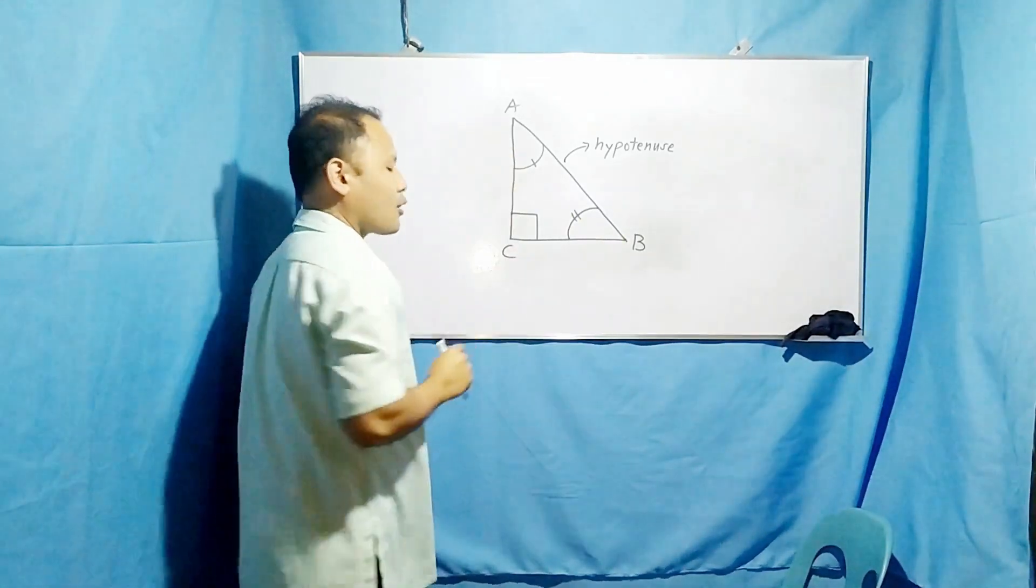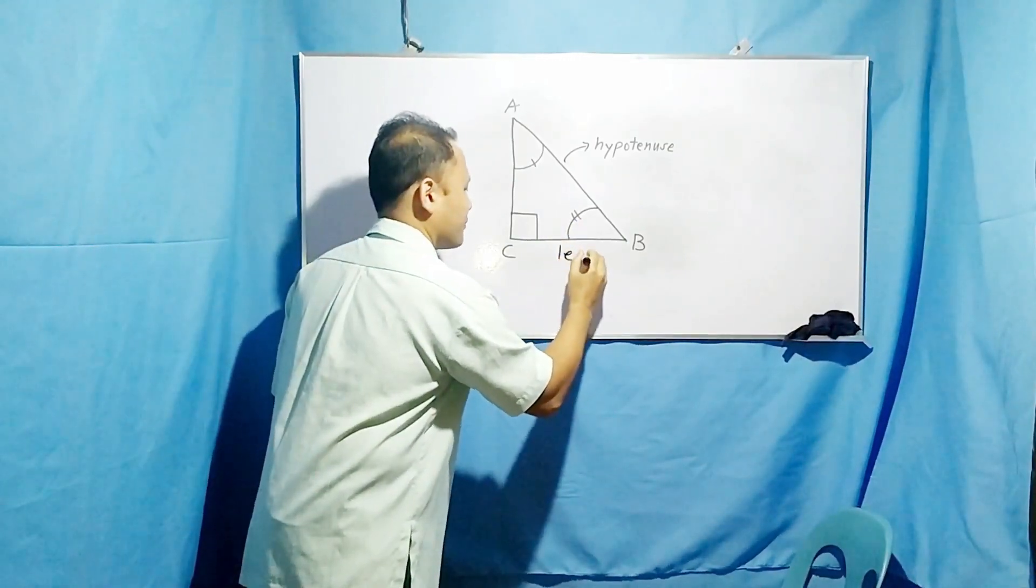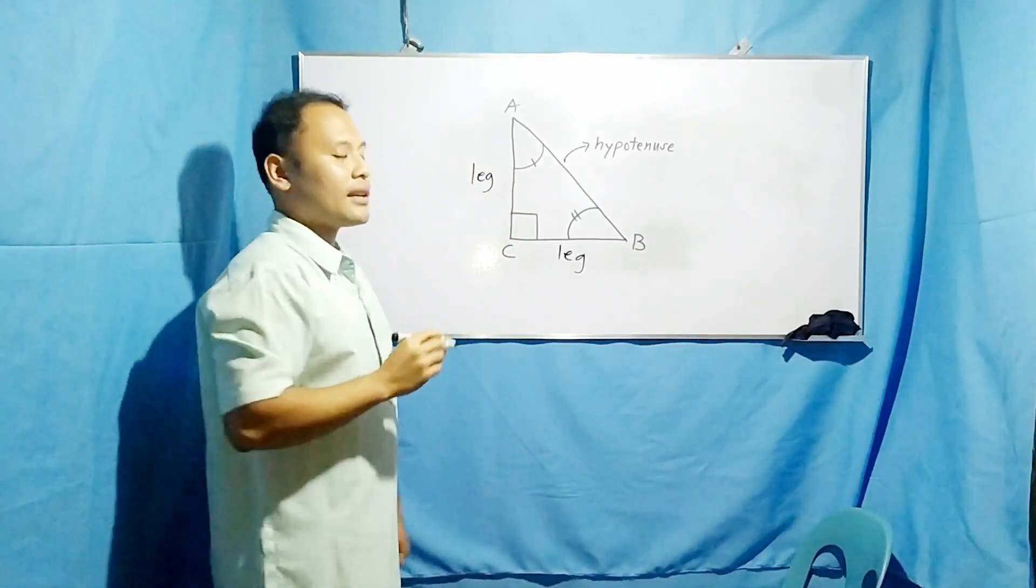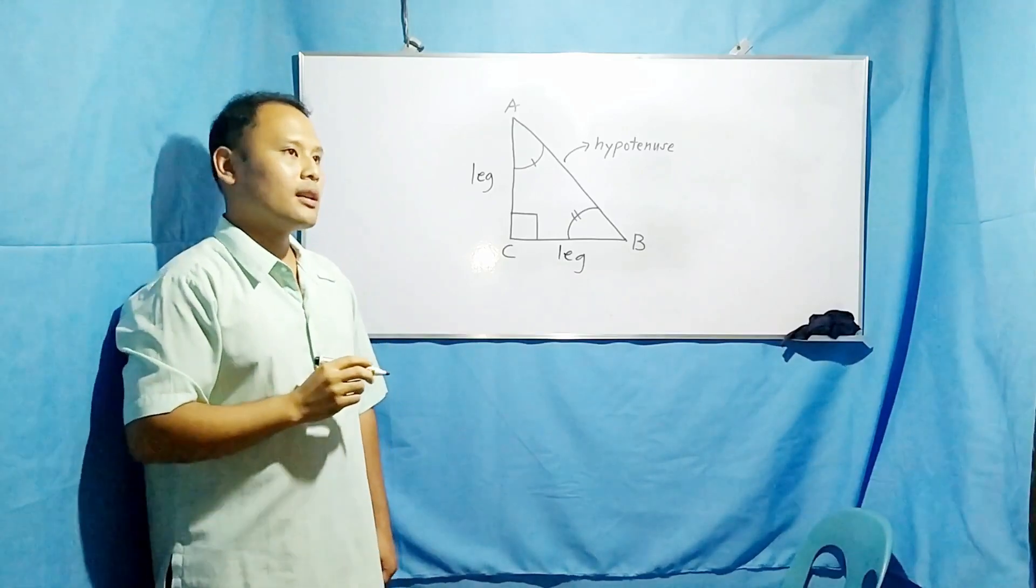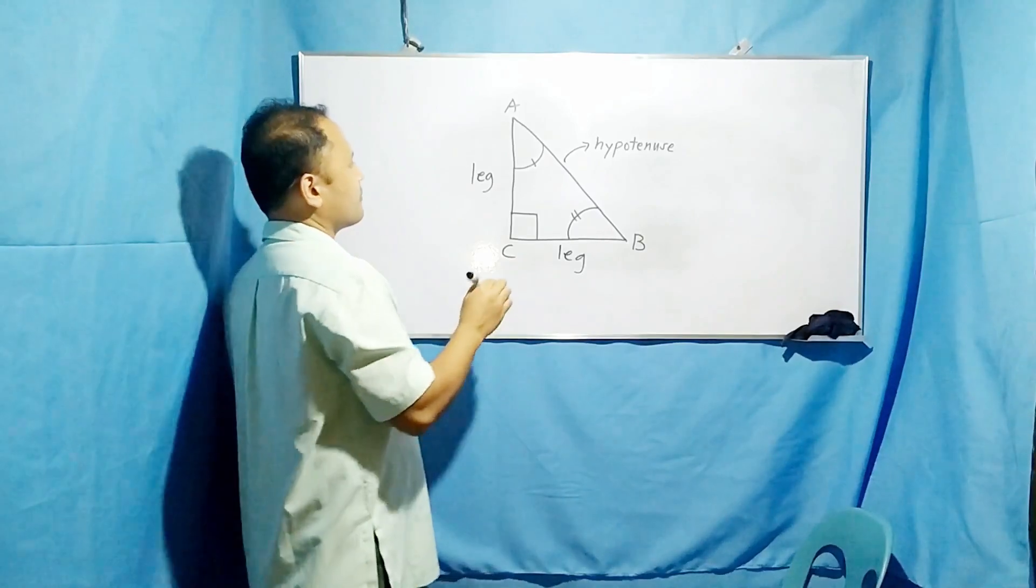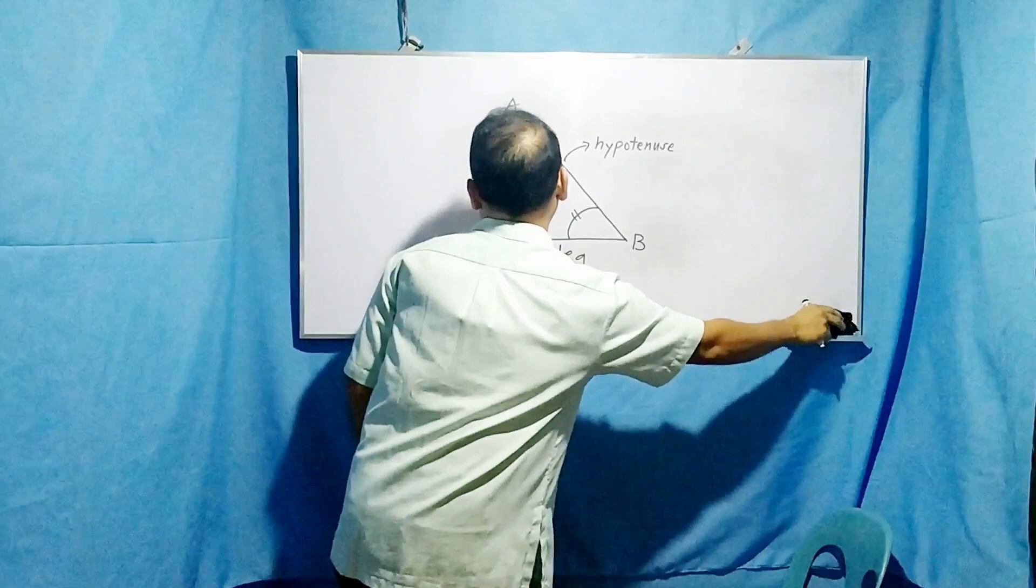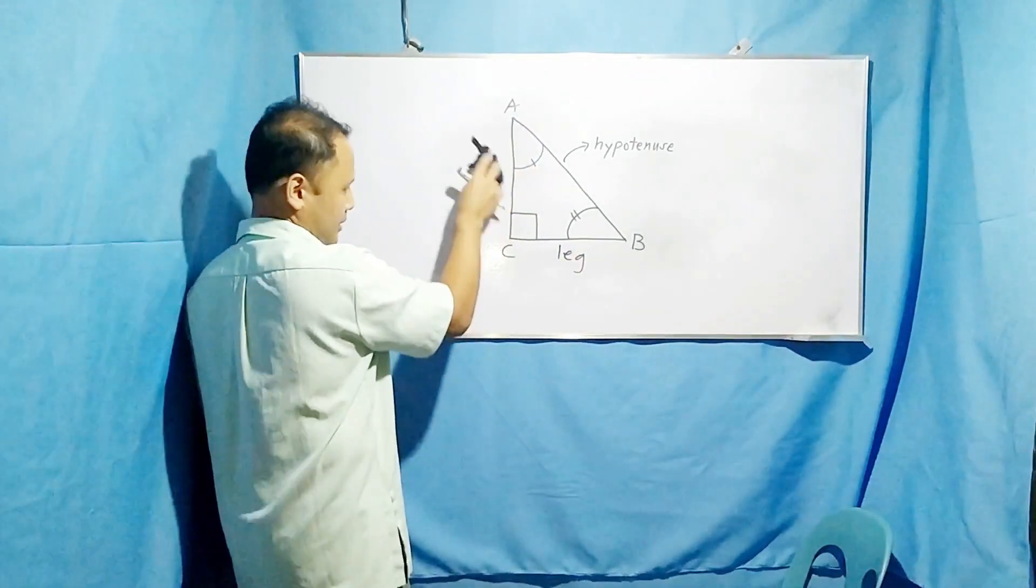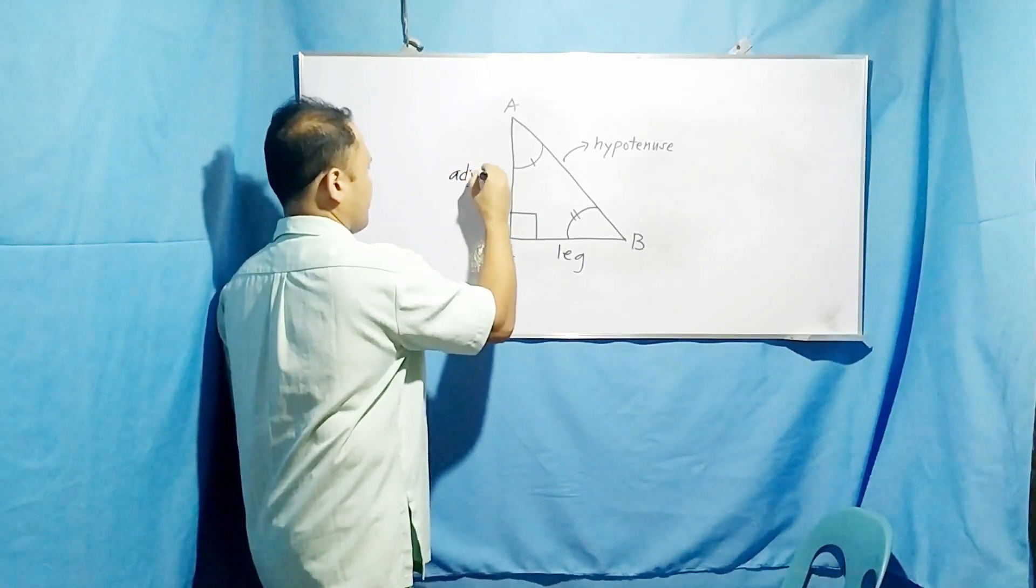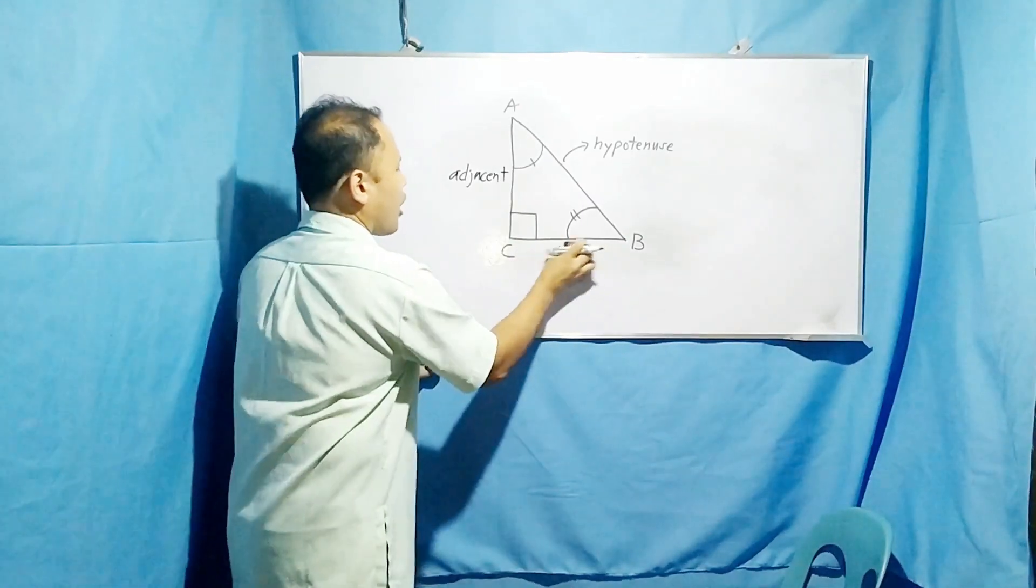These remaining sides are called the legs. This is one leg, this is another leg. They have specific names depending on the acute angle that you will be selecting. Suppose we select acute angle A. So what will happen? This leg here can be named as the adjacent. This one can be called the opposite.